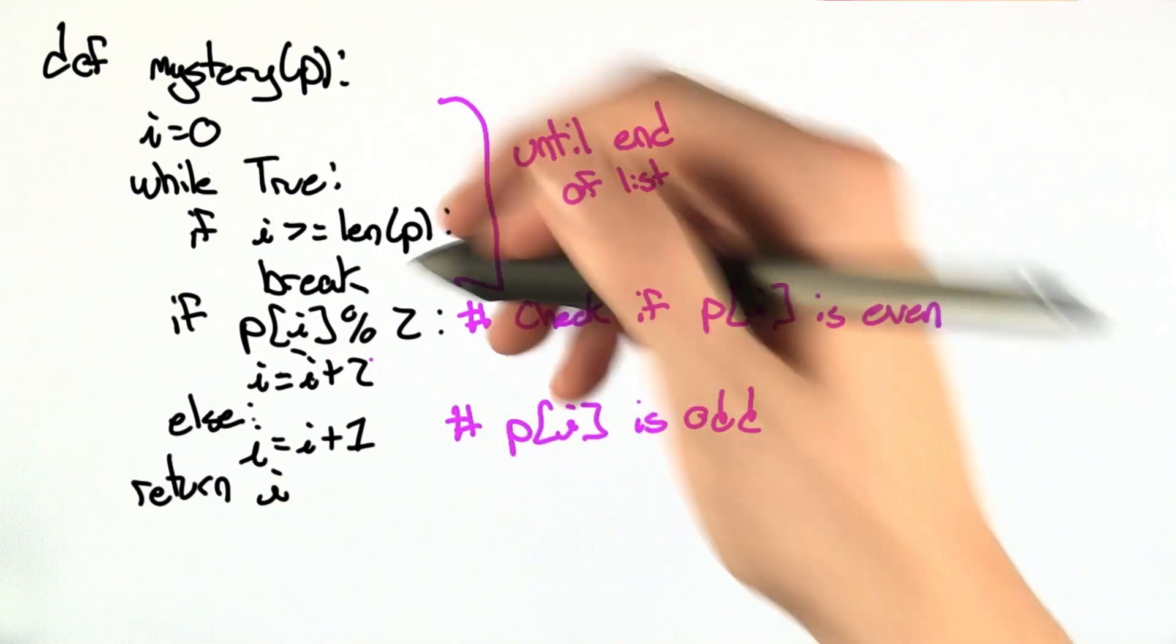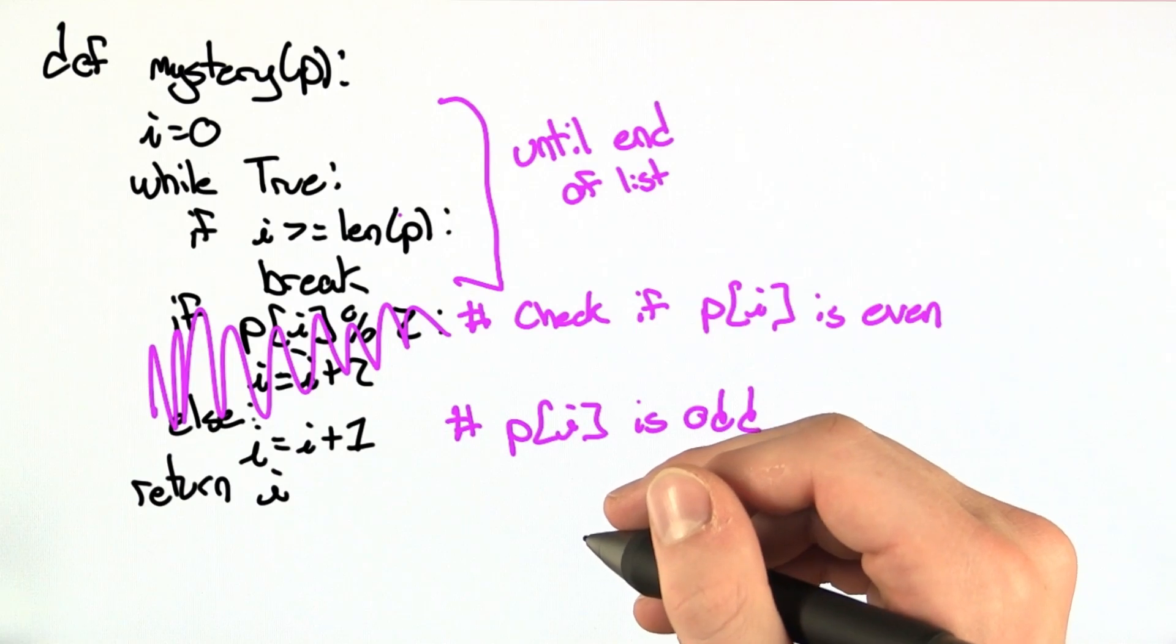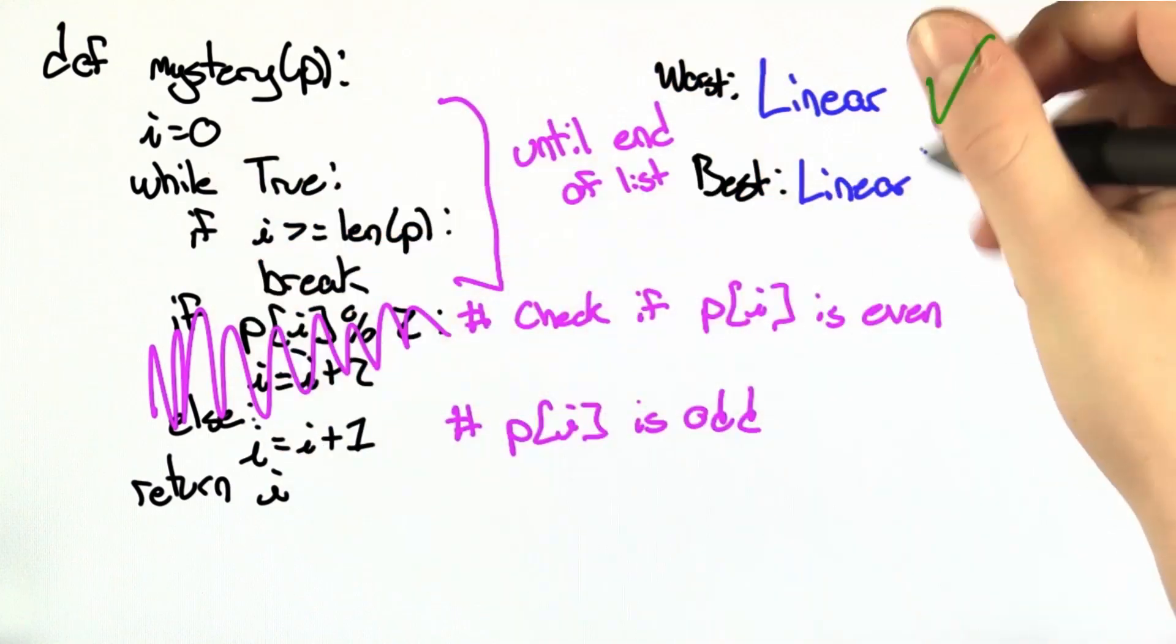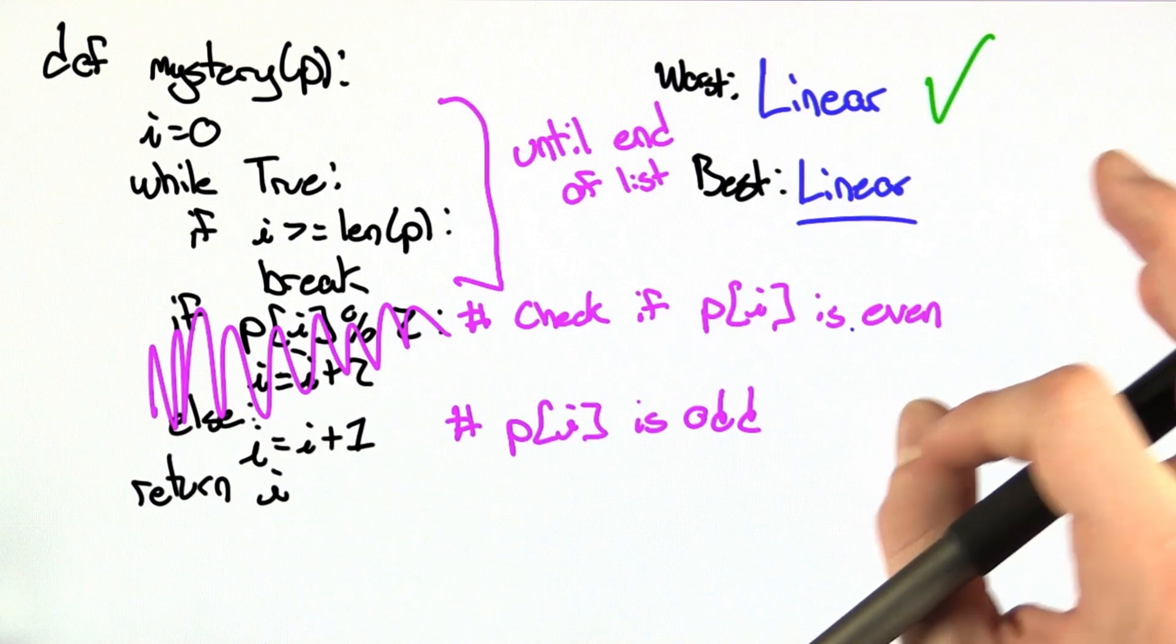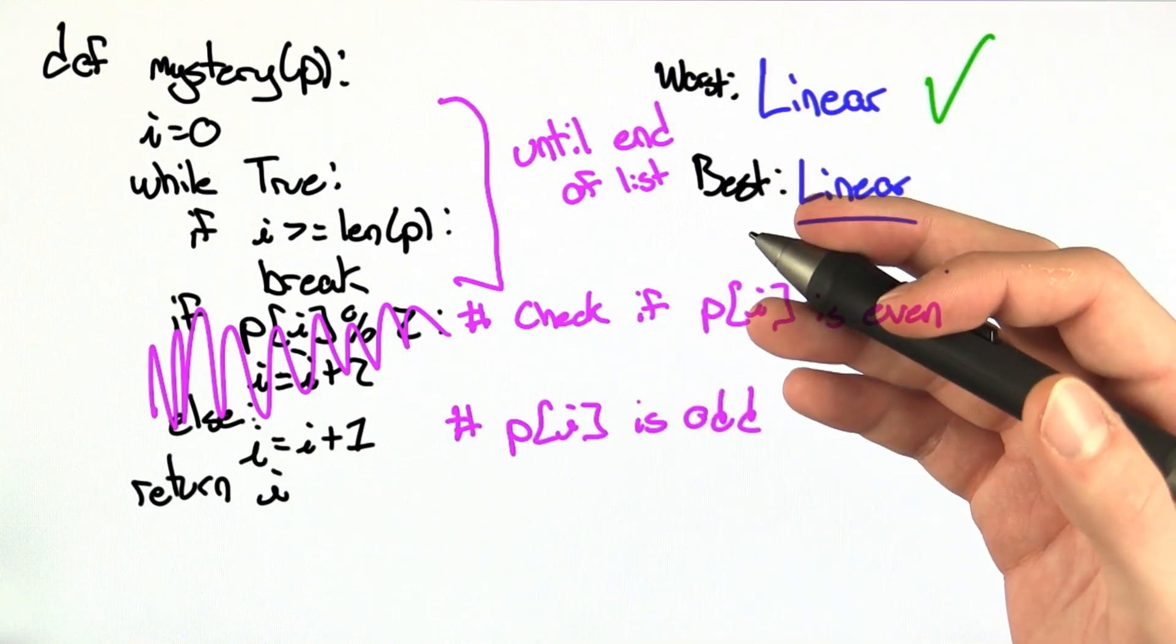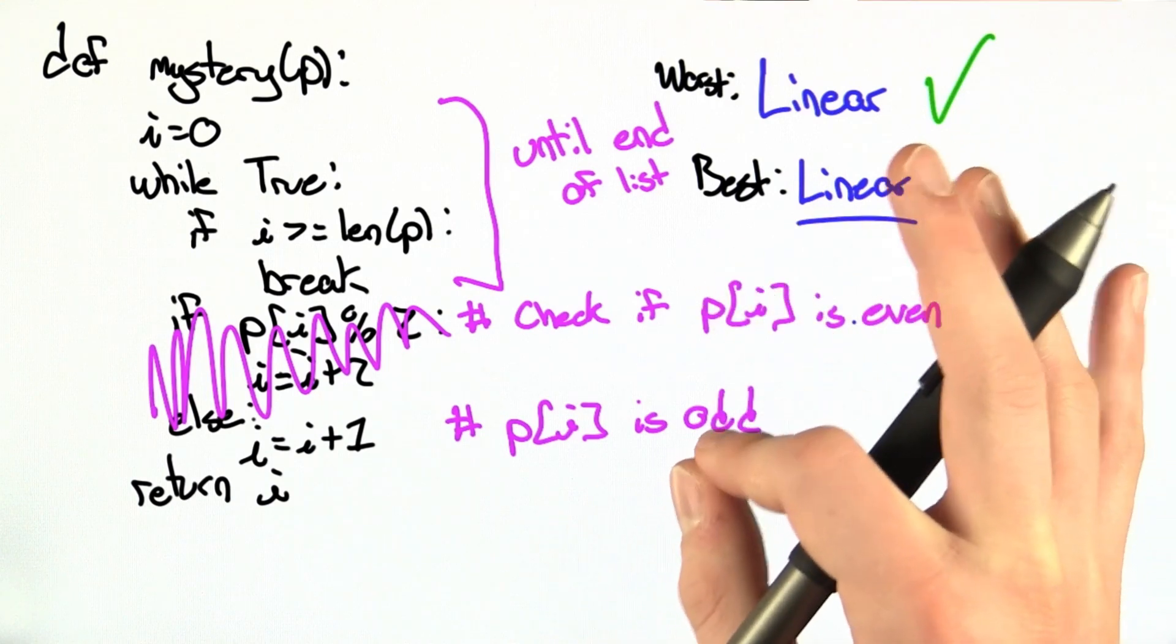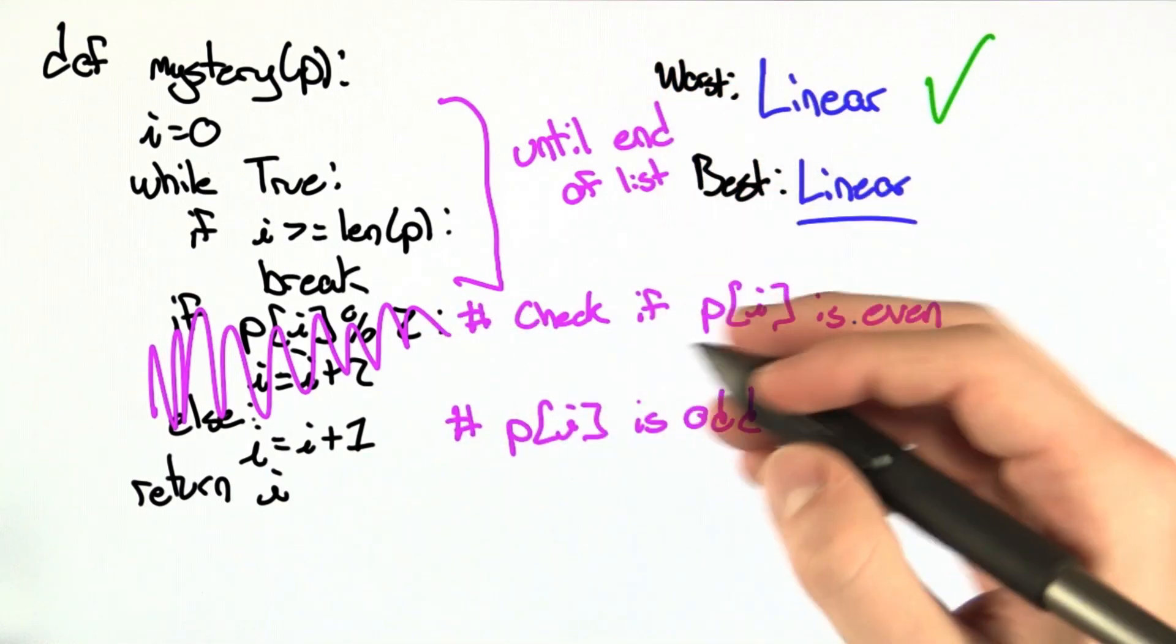Simplifying the worst case, all we have is a while loop through every element in the list p. So this is clearly linear in the worst case. I'll also note that in the best case, the runtime of the mystery function is also linear. And that may be a little confusing at first because it goes twice as fast, but we're really concentrating on the growth of the runtime. So that even if it is going twice as fast as the worst case, if we double the number of elements in the list p, the runtime is also going to double.